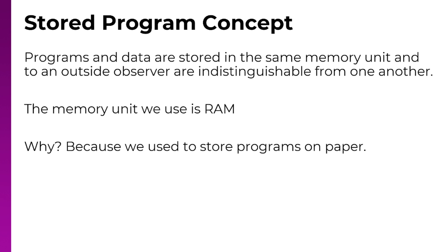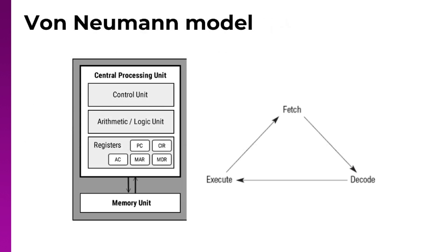Not that relevant to the course, but we used to store programs on paper, on punch cards. You'd have a big stack of paper storing all the data and the program in one place, which isn't great. This is called the von Neumann model, where we use the same piece of memory for both programs and data.